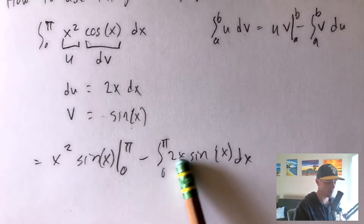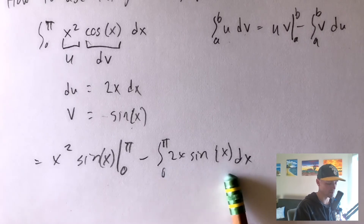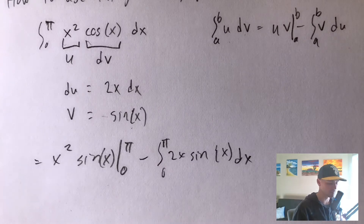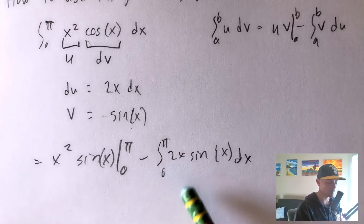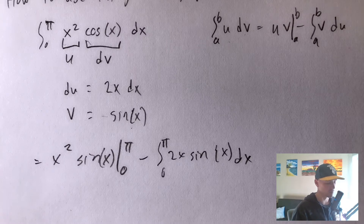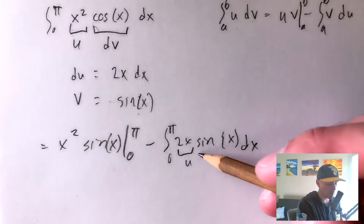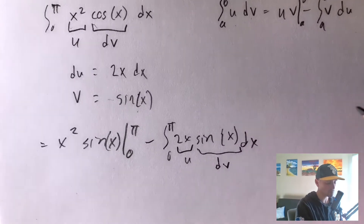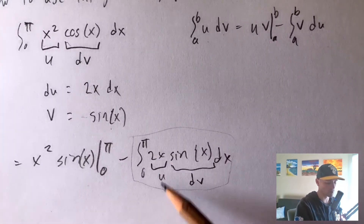The issue here is that the integral we've acquired is still not something we can solve easily — we still have two pieces being multiplied together. However, one thing to point out is that now we have a lower power of x. So if we apply integration by parts a second time and lower our power of x again, that might leave us with something easy to integrate. We'll call the x piece our u again — because we want to take its derivative — and call sine x our dv, then apply the integration by parts formula again to just this integral.